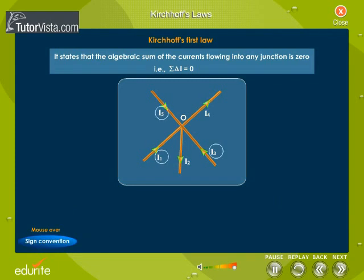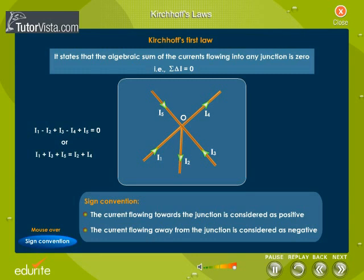Applying the sign convention, I₁, I₃ and I₅ are positive and I₂ and I₄ are negative. That is, I₁ - I₂ + I₃ - I₄ + I₅ = 0. Or, I₁ + I₃ + I₅ = I₂ + I₄. The total current towards the junction equals total current away from the junction.